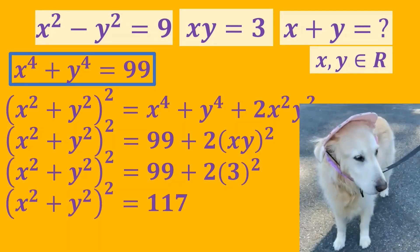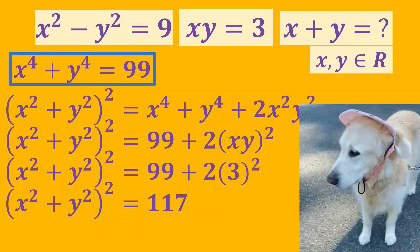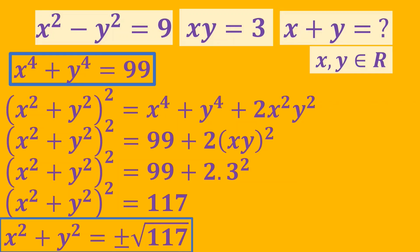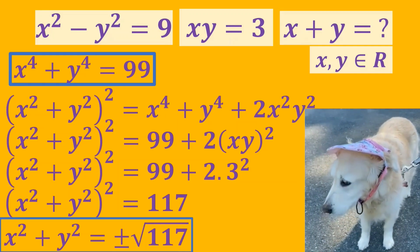So now we need to find the square roots of both sides of the equation. We get the sum of x squared and y squared as plus or minus square root of 117.